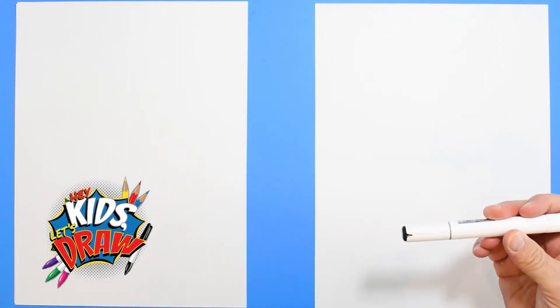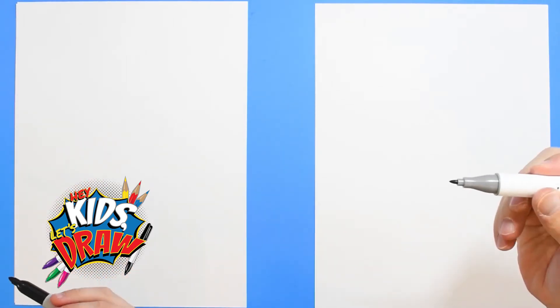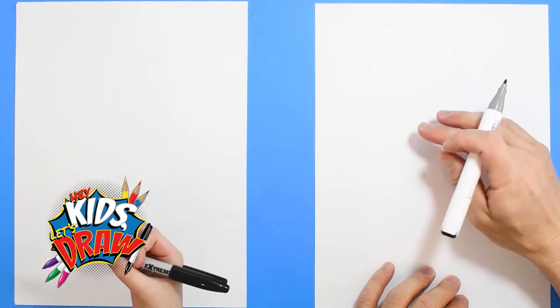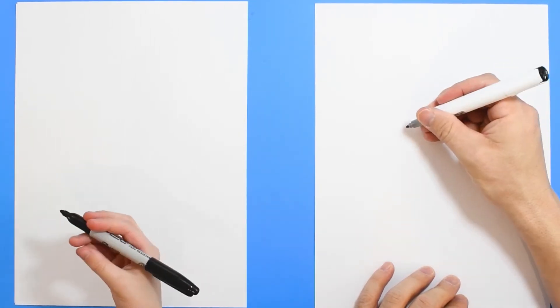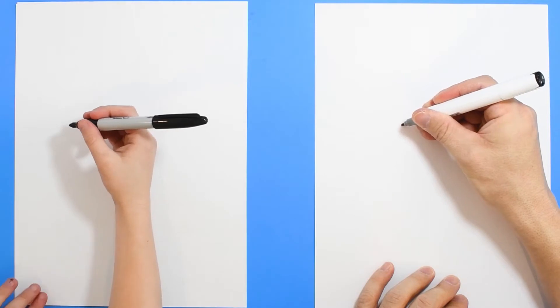We are going to draw an Easter chick hatching out of an Easter egg. We got our black markers. I'm gonna get my pointy tip here, and right in the middle we're gonna draw an eye. Follow me, I'll draw a big circle.